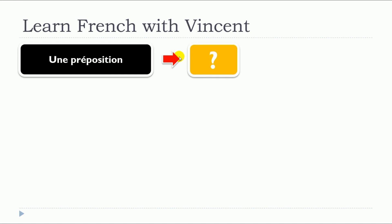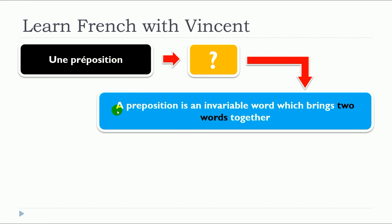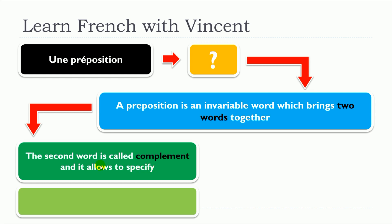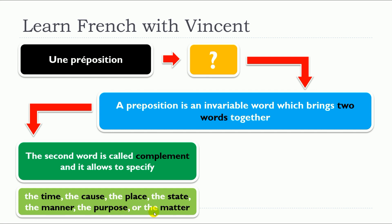So the first thing we need to see together is: what is a preposition? Well, a preposition is an invariable word which brings two words together. The second word is called a complement, and it allows us to specify the time, the cause, the place, the state, the manner, the purpose, or the matter.